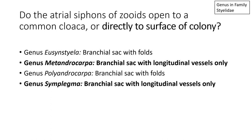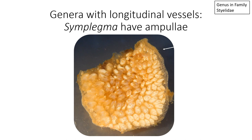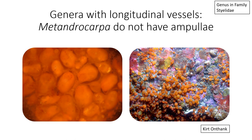If instead the branchial sac has longitudinal vessels only, the options are Metandrocarpa or Symplegma. Symplegma colonies have ampullae, which are terminal projections of the vasculature system. You can see them on the edges of the colony — I've drawn an arrow where the ampullae are particularly obvious; they're often long and finger-like. In contrast, Metandrocarpa does not have ampullae.